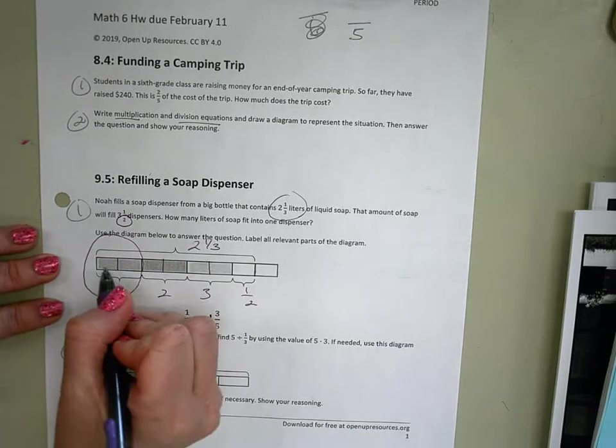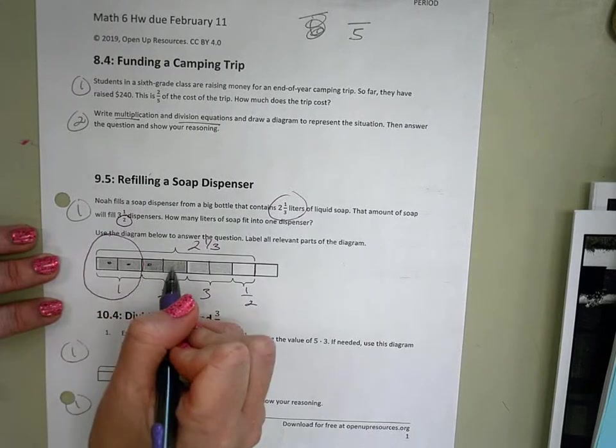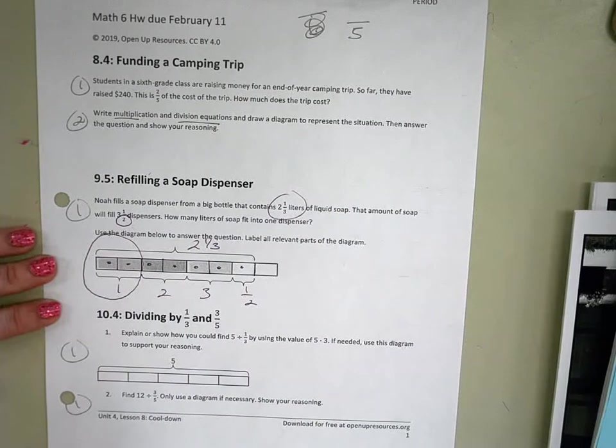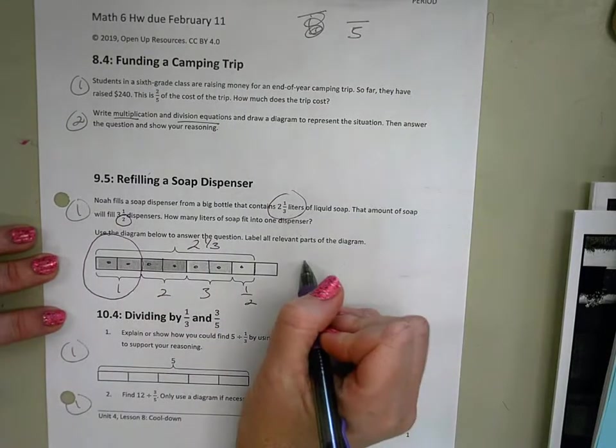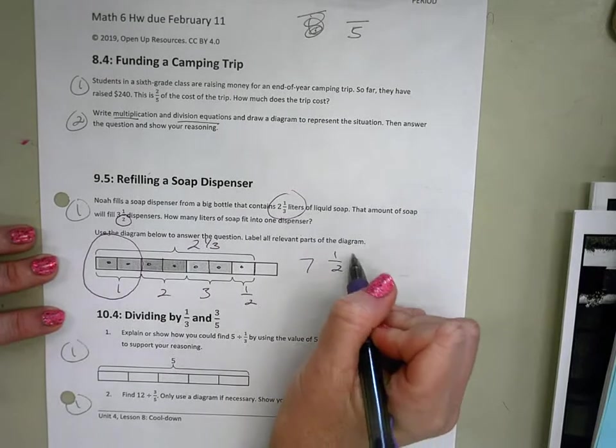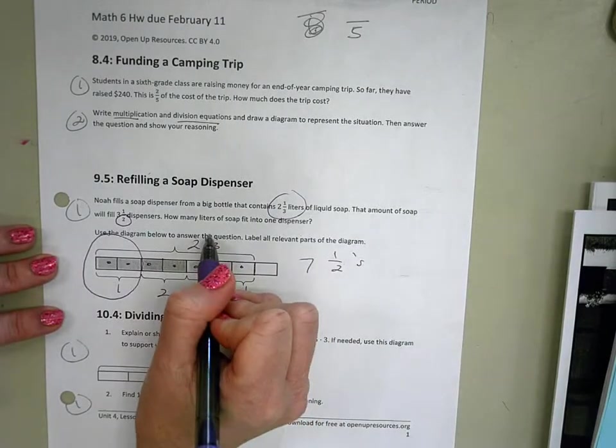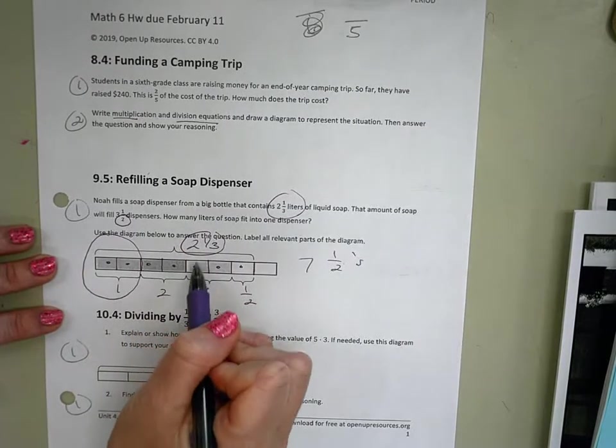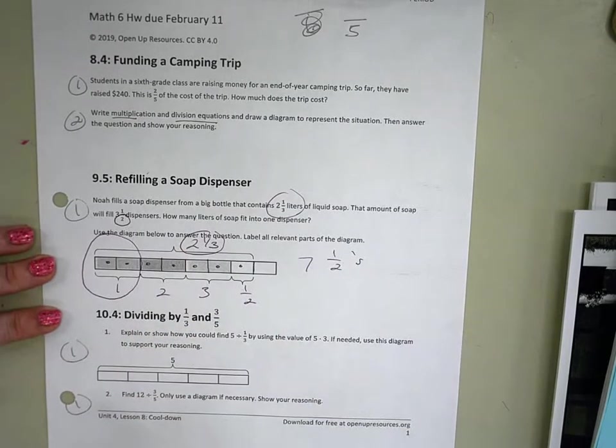And this is why this is awesome. Do me a favor and count how many halves do we have now? Yeah, we have seven. So we have seven of these halves. And we're going to take this two and a third, and we're going to separate it evenly into each of those groups of one half.